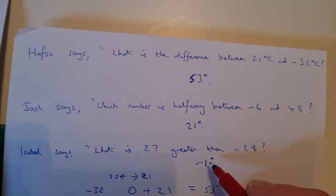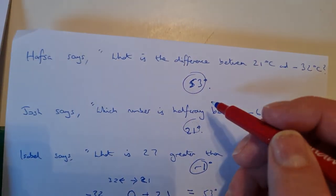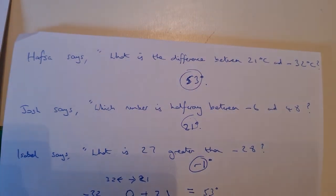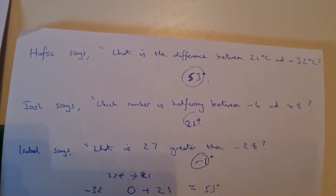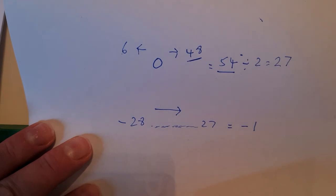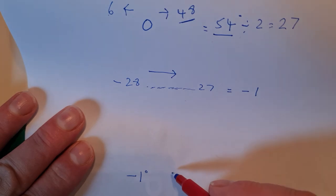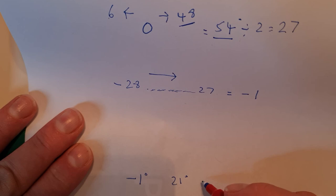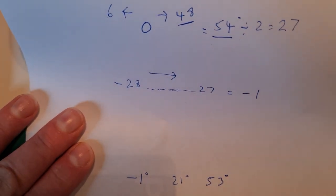Now, I've got my three answers. And what I have to do now, the second part of the question, is to put them in order from the smallest to the largest. Well, I can see that minus 1 is first, then it's 21, and then it's 53. So I would write my answer in order: minus 1 degrees, 21 degrees, and 53 degrees. So that's the second type of questions you'll come across.